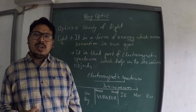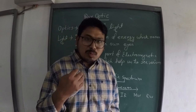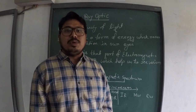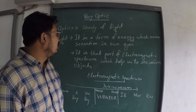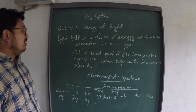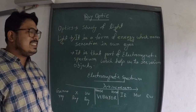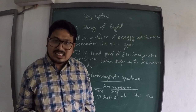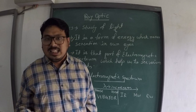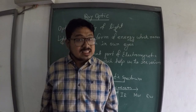Light is an important topic in physics. Though researchers are going to do more research on light, whatever we have known, we are going to discuss it as it is a very important topic for your board. So, what is light? It is a form of energy which makes sensation in our eyes. Without light, we cannot see. We cannot see each other or the objects around us.